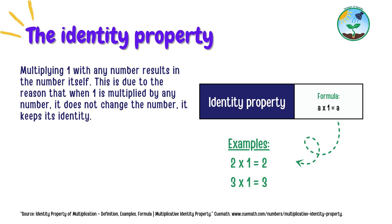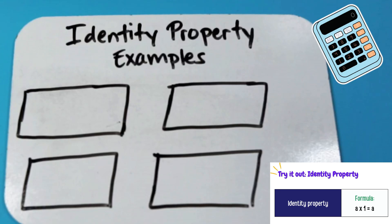So let's get into some examples. We'll use a few random numbers to fill in our formula and see how it works. For identity property, the formula is a times one equals a, where a will be the number and one will be the multiplier.